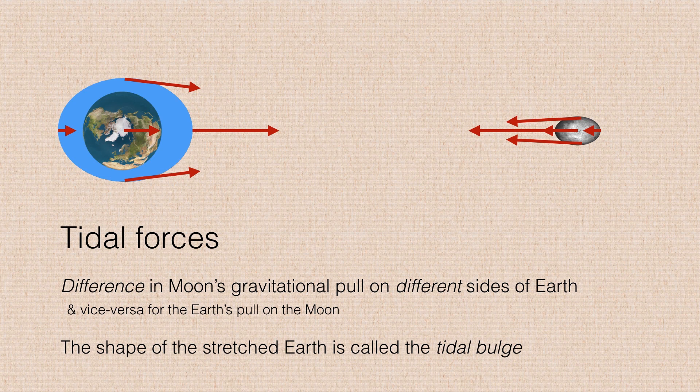Because of the tidal forces on Earth, the water is going to flow into one of two tidal bulges. And it always works out that there's a bulge on either side of the Earth, regardless of which side is closer to the Moon. Although often the bulge that is closer to the Moon is going to be a little bit higher than the bulge that's opposite the Moon.